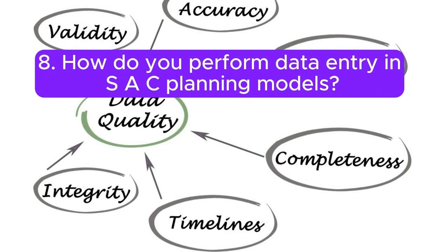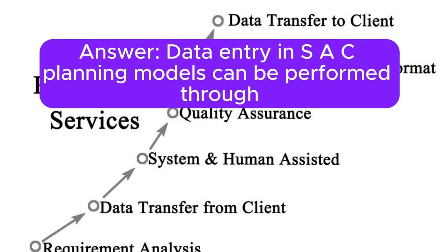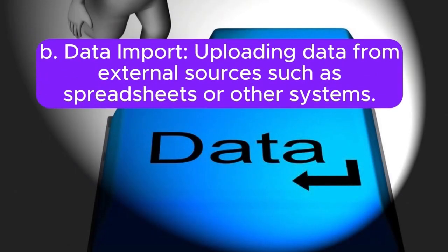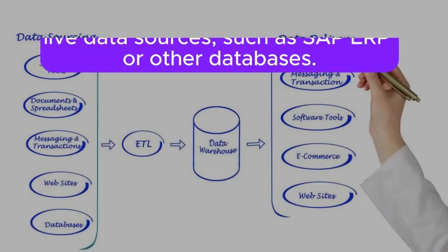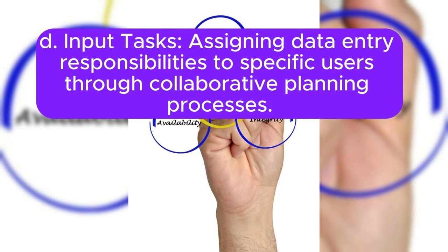Question 8: How do you perform data entry in SAC Planning Models? Answer: Data entry in SAC Planning Models can be performed through: A. Manual input — directly entering data into the cells of a planning model. B. Data import — uploading data from external sources such as spreadsheets or other systems. C. Data integration — connecting to live data sources such as SAP ERP or other databases. D. Input tasks — assigning data entry responsibilities to specific users through collaborative planning processes.